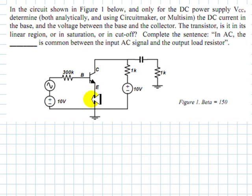determine both analytically and using CircuitMaker or Multisim the DC current in the base, this current here, and the voltage between the base and the collector, this voltage.